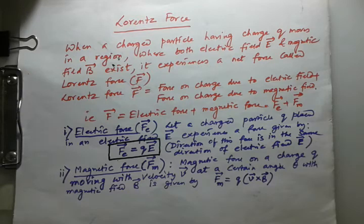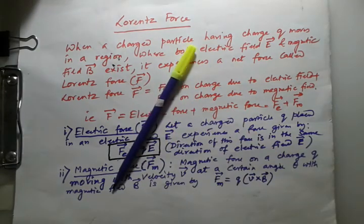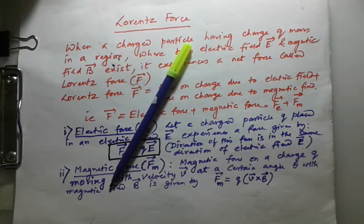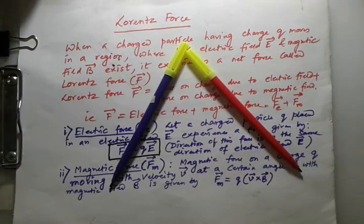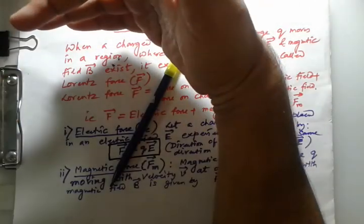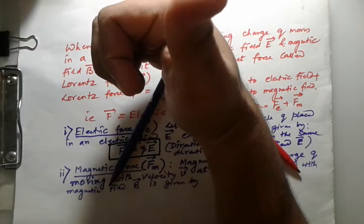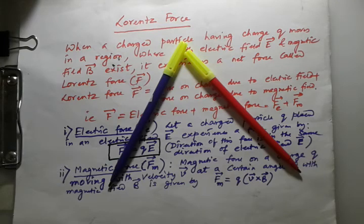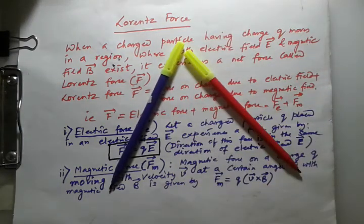Now, what is the direction of the magnetic force? Suppose this is your V vector and this is your B vector. If you want to find out the force — the charged particle is moving in the direction of V vector — you put your hand in this way and hold at the smallest angle. Your thumb will show the direction of the force, so F_M will be along the thumb, in this direction.